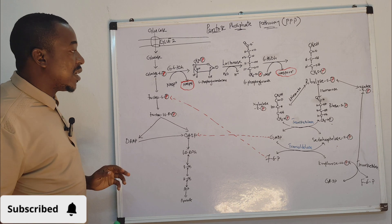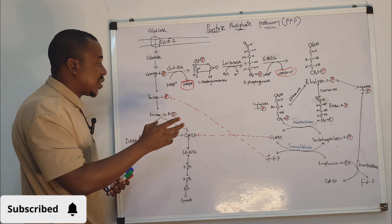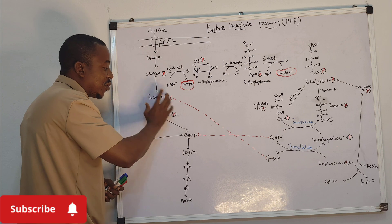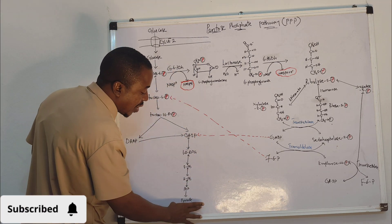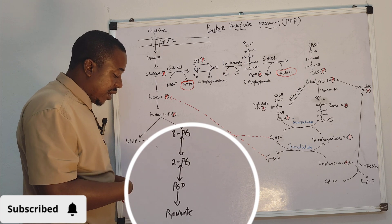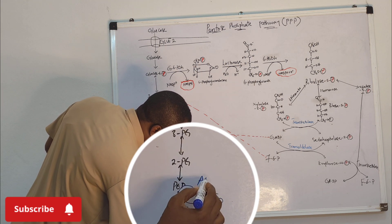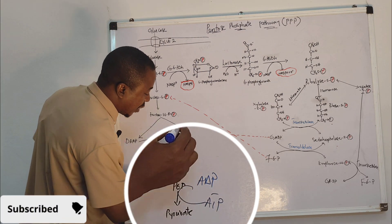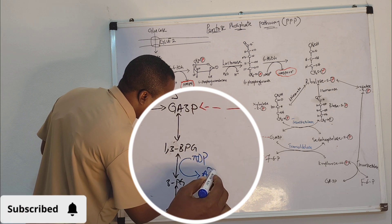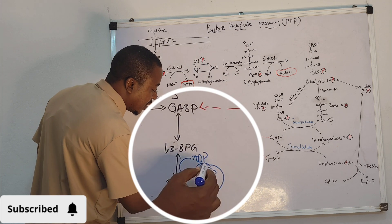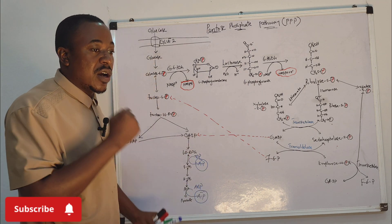As I taught in my glycolysis video, glucose is converted to glucose-6-phosphate, then to fructose-6-phosphate, then to fructose-1,6-bisphosphate. This reaction is glycolysis. The essence of glycolysis is to produce ATP from ADP — converting ADP to ATP. At the end of the day, what you get from glycolysis is ATP.